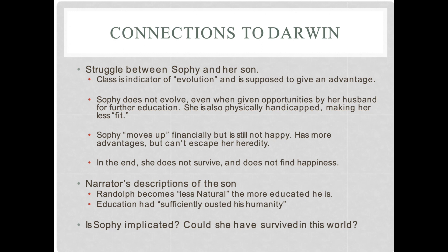You have this struggle happening between Sophie and her son because he, even though a product of the gentleman father and the working class mother, is born into all the social class advantages of the father's class. He goes to one of the best schools that money can buy, has all the education of an upper class man, all the advantages. He is then positioned to be the dominant survivor rather than Sophie.